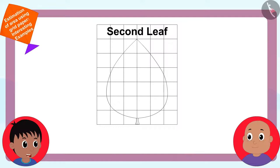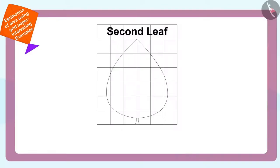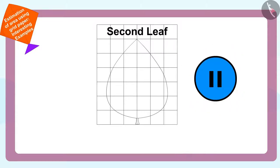Raju then asked Bablu to use the same process to find how many squares are in the area of the second leaf. He invited the children watching to help Bablu find the answer, suggesting they pause the video if they wished to try.